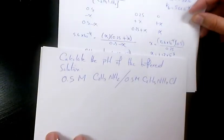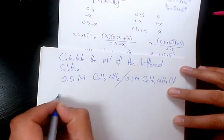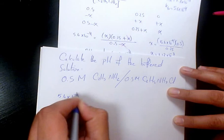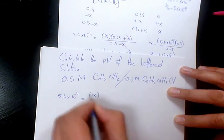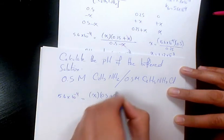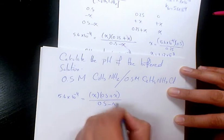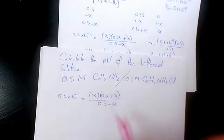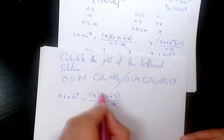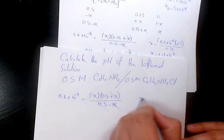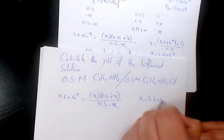When we arrange it in the same way, 5.6 times 10 to the power of negative 4, it's gonna be X times 0.5 plus X divided by 0.5 minus X. X and X cancel out, these two cancel out. So X will be equal to 5.6 times 10 to the power of negative 4.